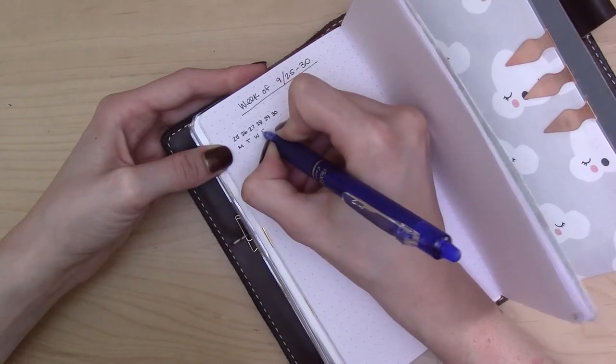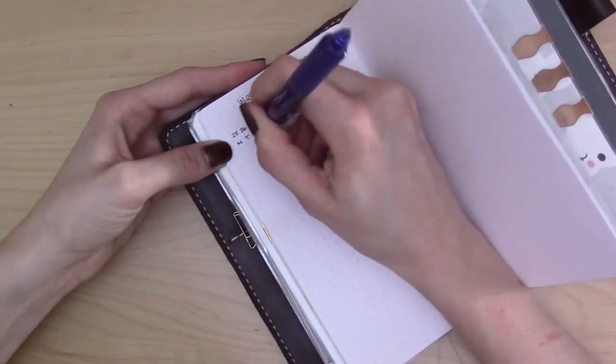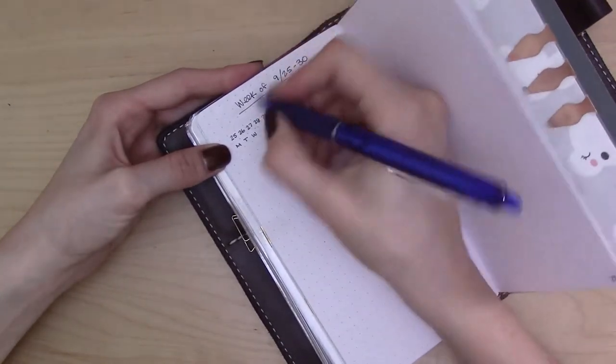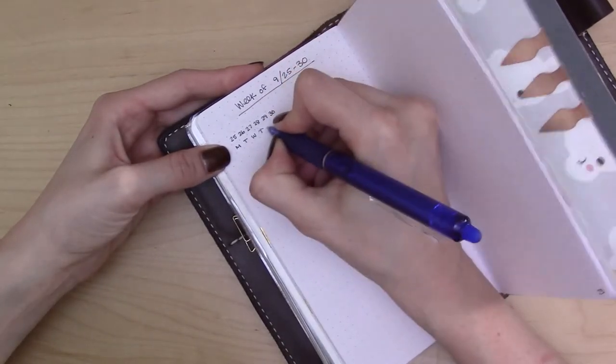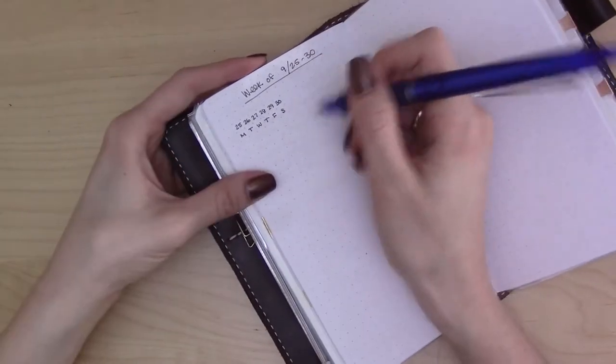Basically each of these columns is for, forgetting what Thursday is, is for a specific day, and then I just put like the to-do bullet in the column of the day it's for.